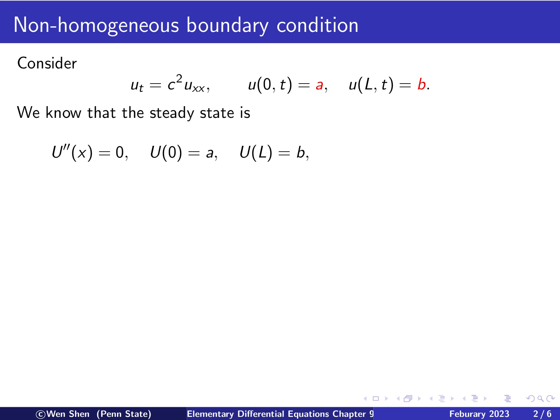Let's begin with finding out the steady state, which we will see soon is very important here. So the steady state capital U of x will be a function that doesn't depend on time, and the second derivative in space is zero, satisfying the two boundary conditions: at zero is a and at l is b. So we know U will be a linear function. It's a straight line connecting the value a and b at x equals zero and x equals l. So we can write this function out immediately. We know how to write the equation of a line, so it's here.